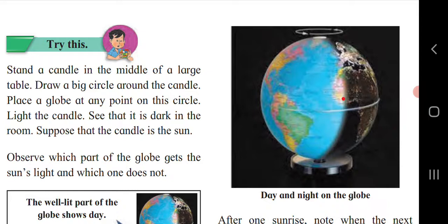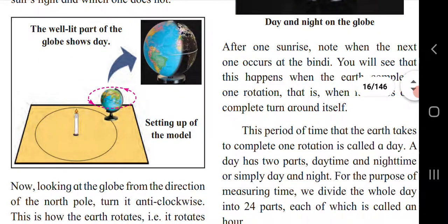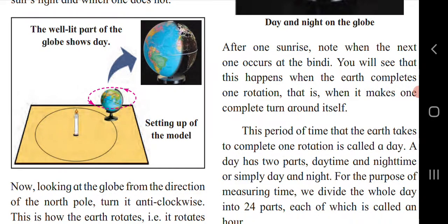The dark part represents night in those regions, and the lit portion represents daytime. The well-lit part of the globe shows day, and where the candle's light is not reaching, that part is night.